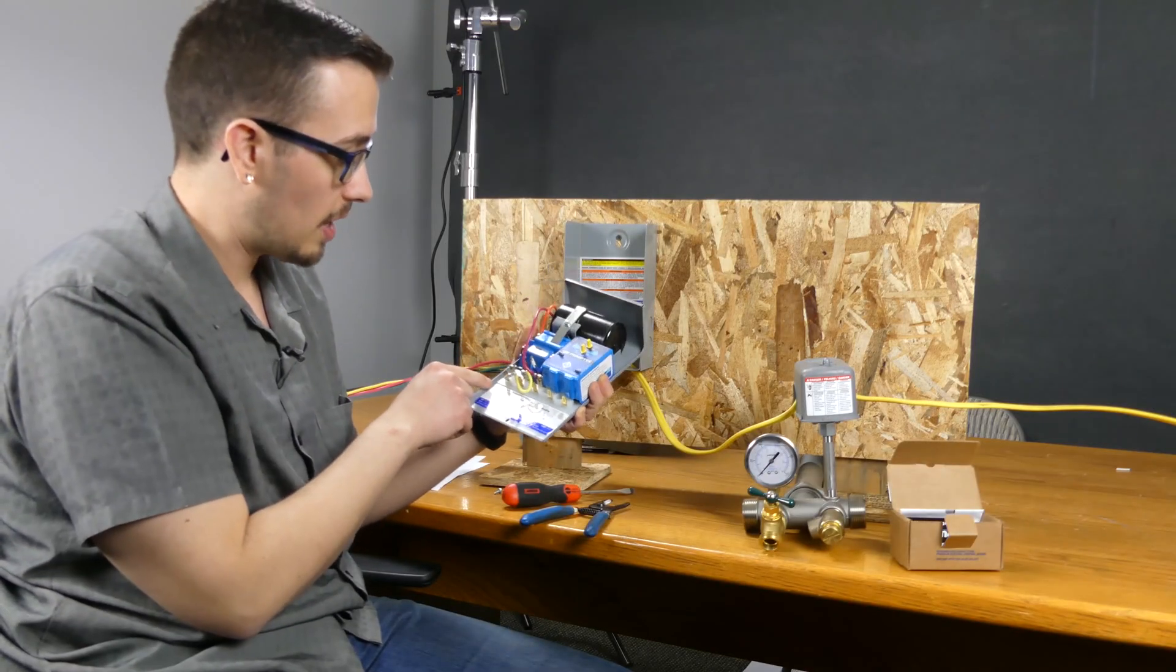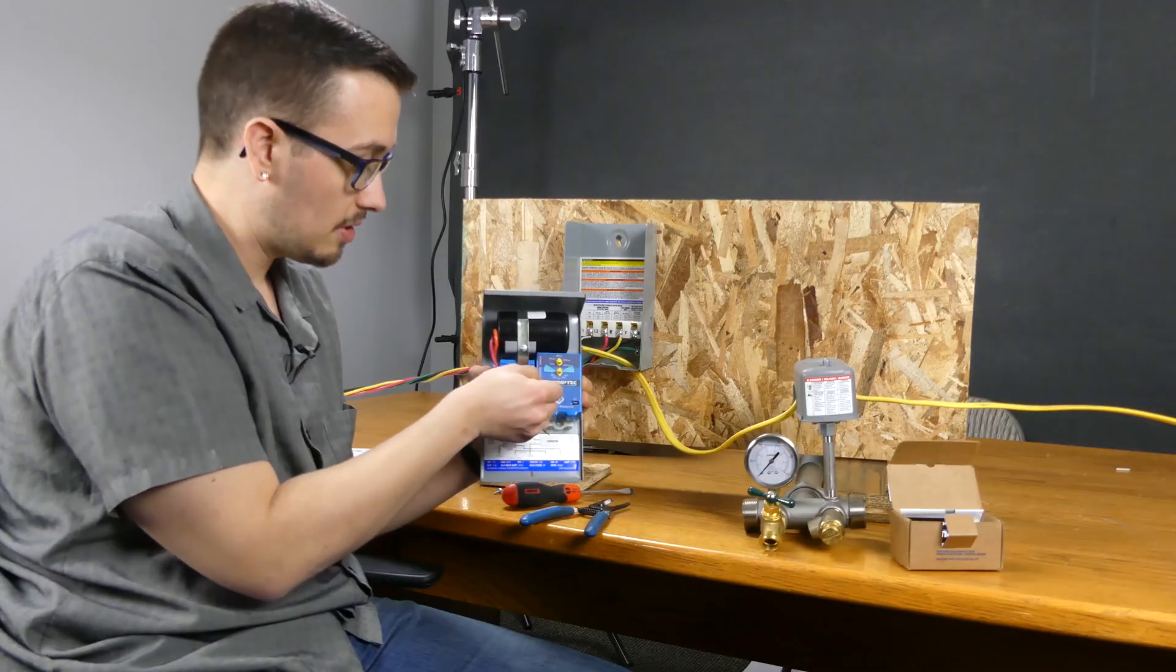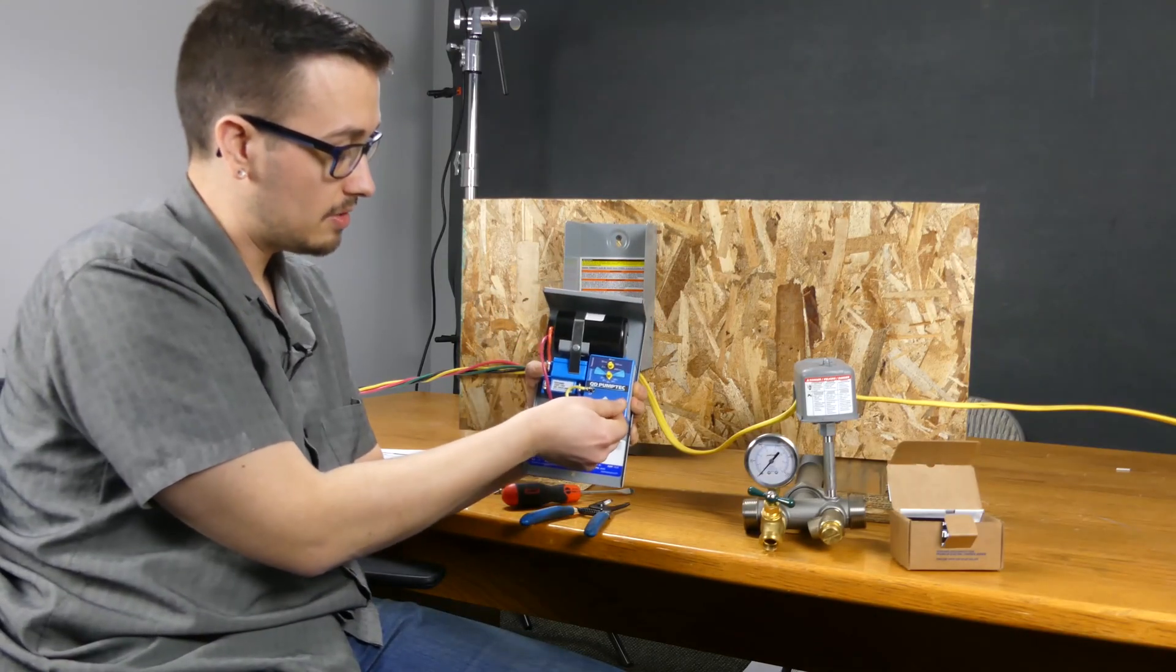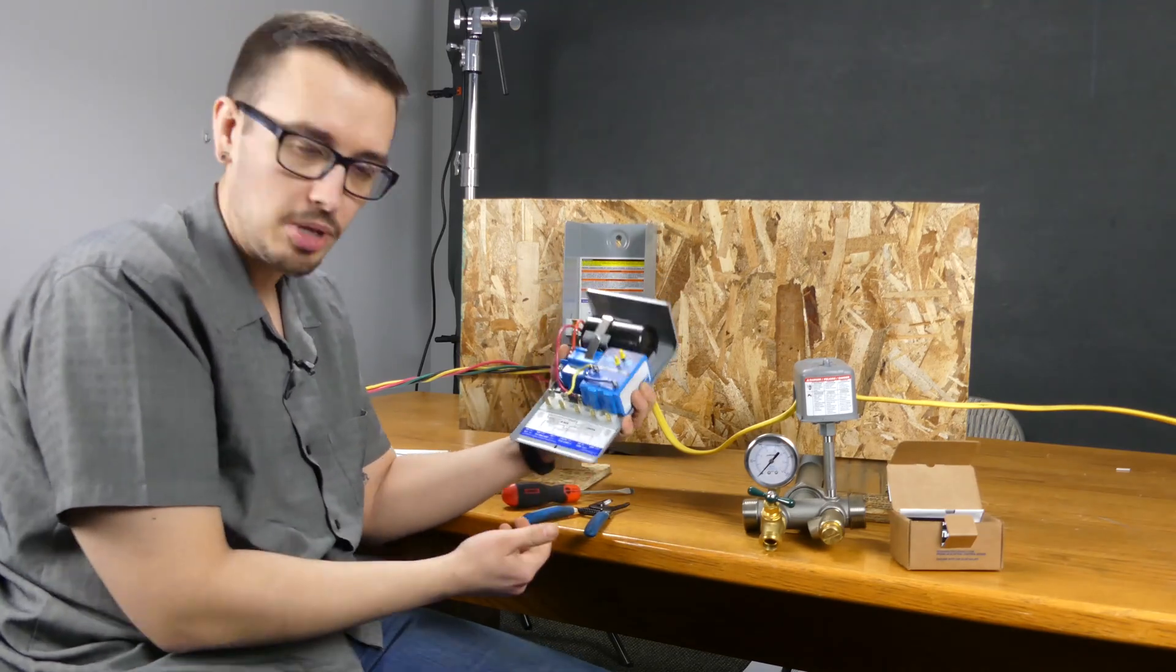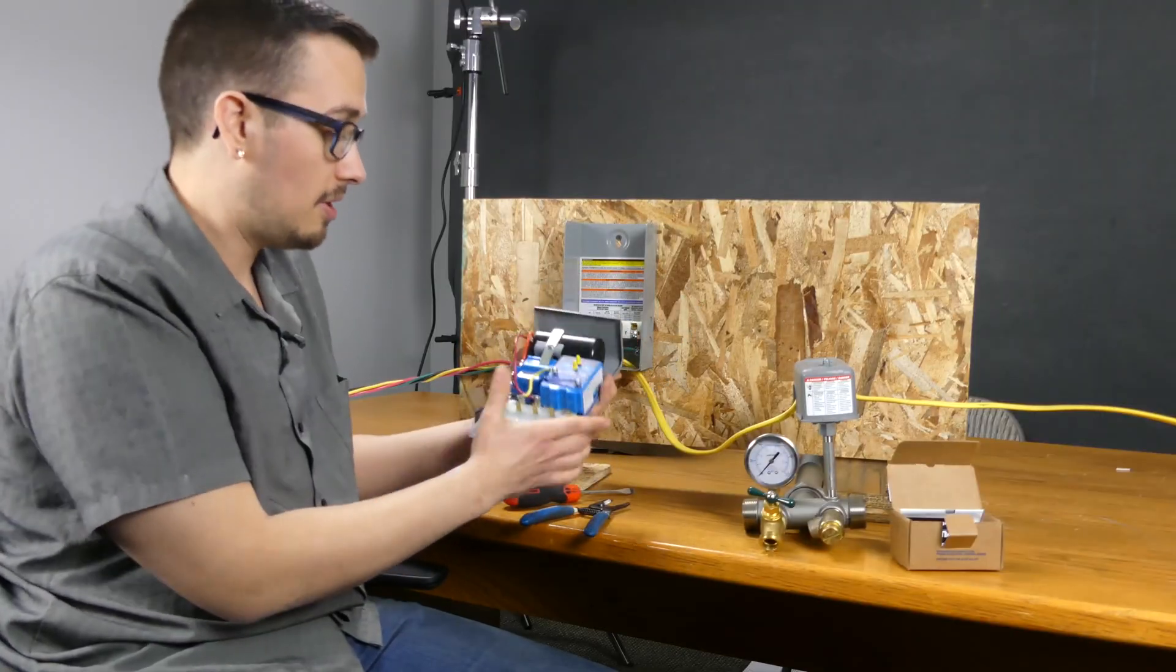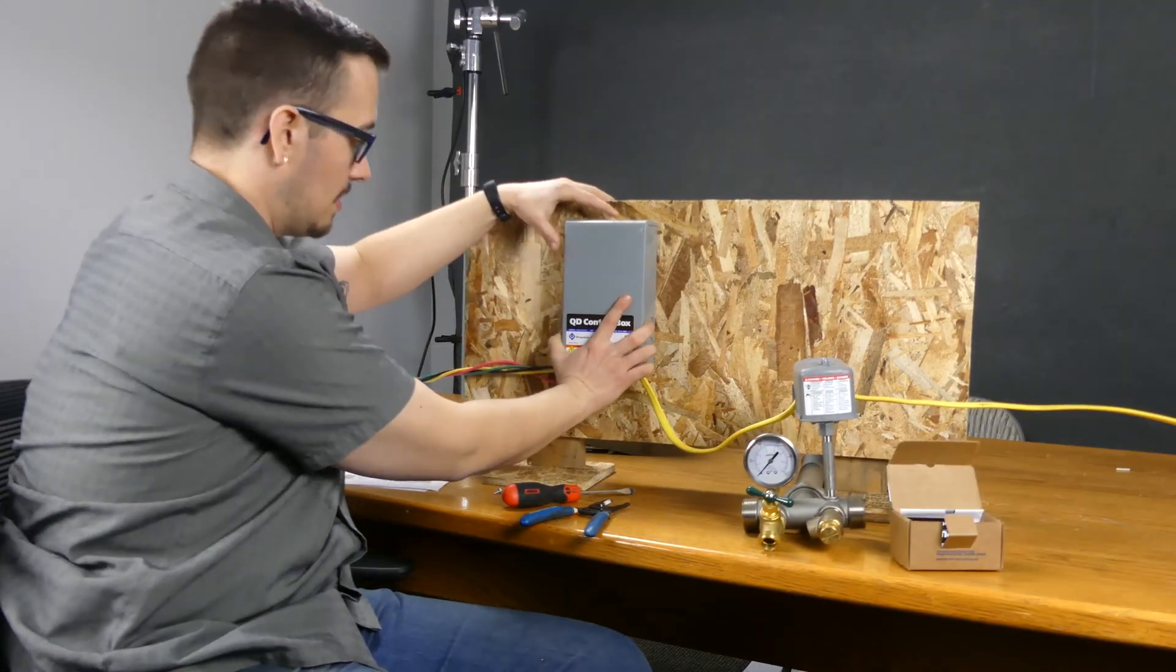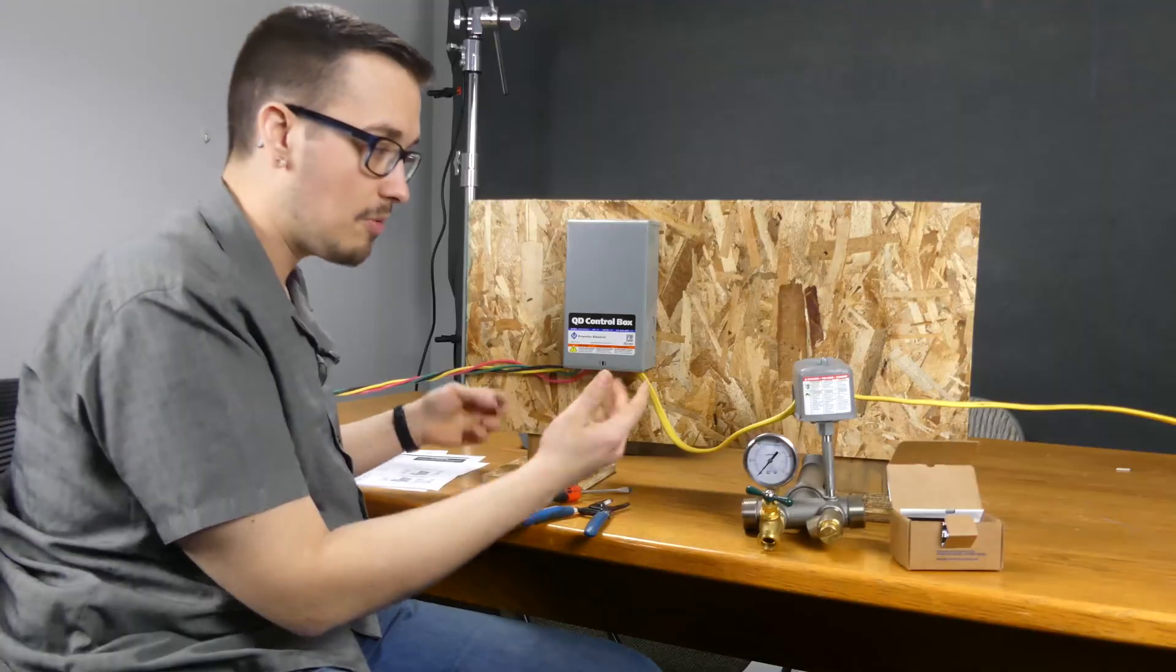And then we just simply hook these wires back up. So we've got L2 going up here, that's our yellow. L1 going right over here. And it's almost like the factory made these just long enough and they planned that you were gonna put one of these in here. And so that's all we need to do. We're ready to put this back on here and put our screw in and hit the power, and we're back up and running.